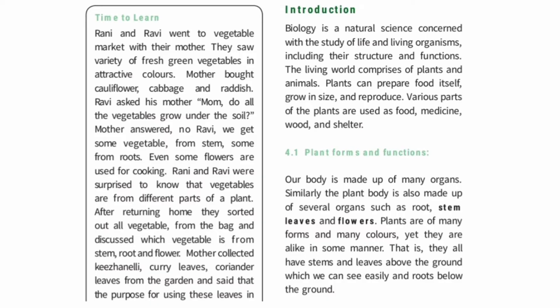Very small plants are called herbs. Bushy plants are called shrubs. Tall plants are called trees. You can see different plants in the same way — they share this common classification.